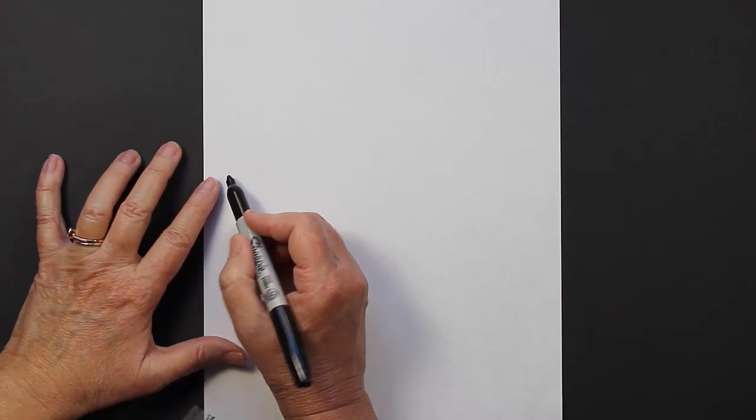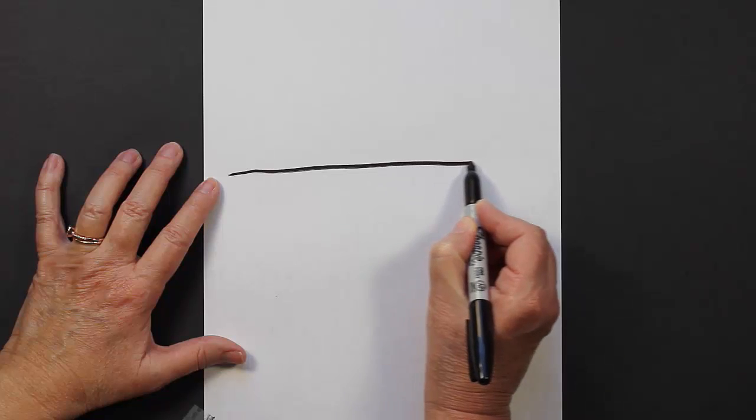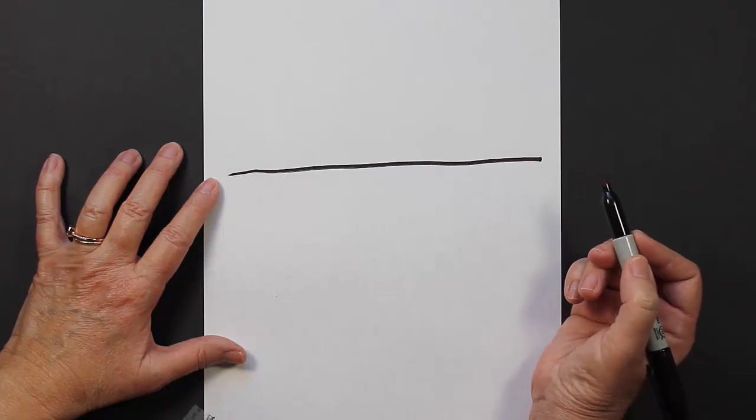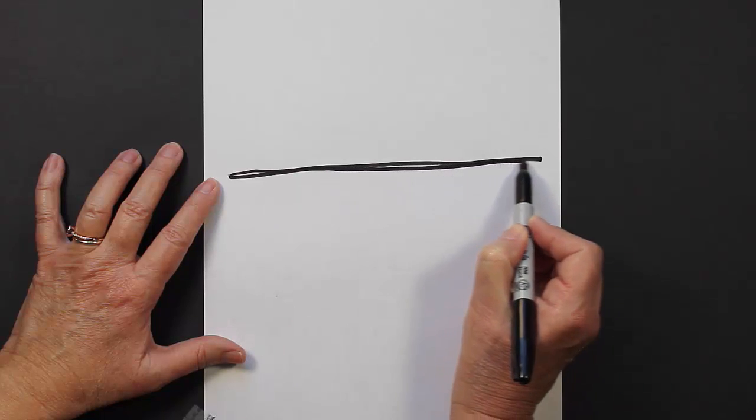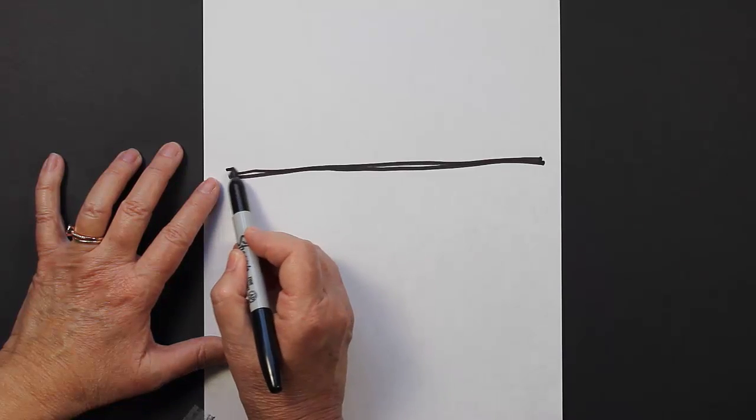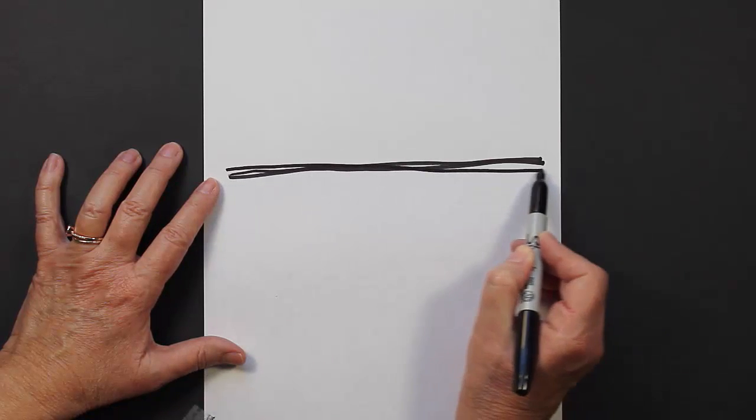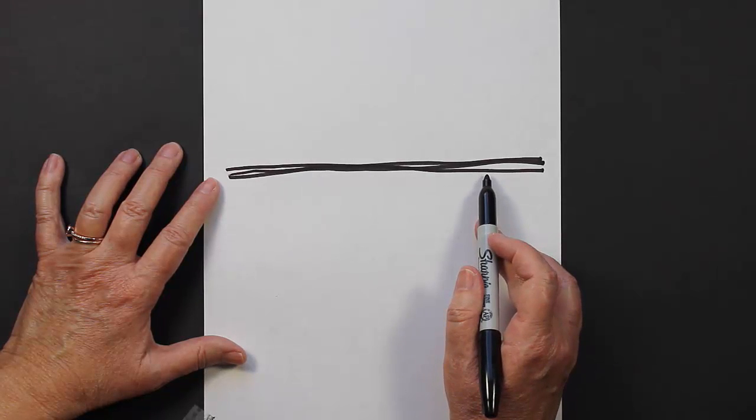The first thing you're going to do is make a tree branch. It's basically a line going across your paper. We're going to double that up with another line, and it's not going to be perfectly aligned. It's going to be a little bit more loose. If you want to make another line, that would be fine as well. That's going to be the branch that our sloth is hanging from.